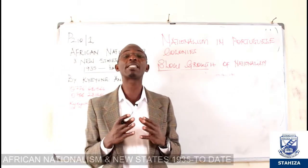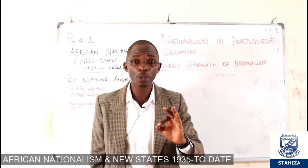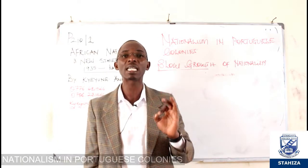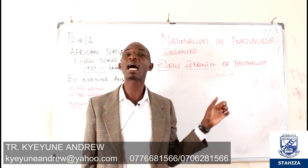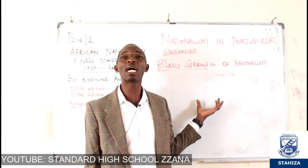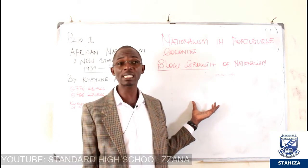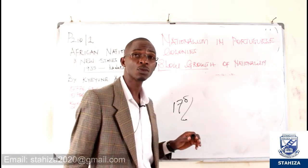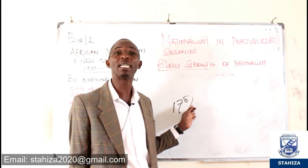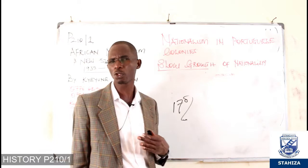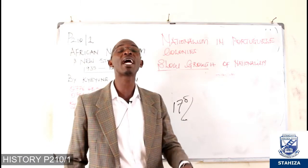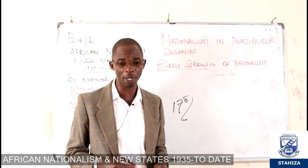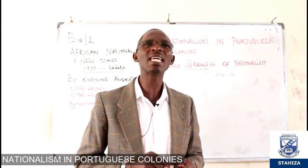This was not only the case in Angola but also in Mozambique, Cape Verde, and indeed across Africa. For example, in Congo by 1960 at independence, the whole country had only around 17 graduates. Uganda faced a similar situation by 1962. High levels of illiteracy meant fewer people were ready to join politics or liberation movements and struggles for independence.